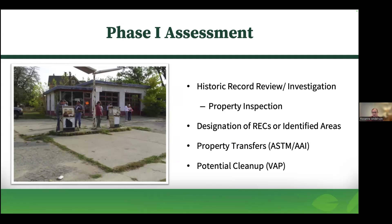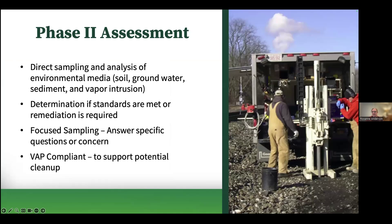There are two different types of environmental assessments. The first is a Phase One assessment — a paper-type assessment where they review all historical records, Sanborn maps, prior ownership, conduct interviews, and do a site inventory. If they identify a recognized environmental condition (REC), they move on to a Phase Two, which does actual sampling — soil samples, groundwater samples, vapor air intrusion samples — to get a scope of the level of contamination. From there, you can create a remedial plan for cleanup.